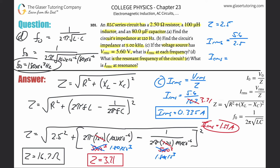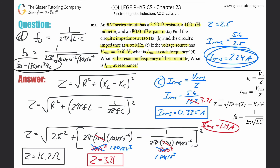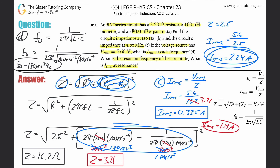So the RMS current at resonance is 2.24 amps. Notice how this is the maximum current that can flow. When the circuit resonates, the inductive and capacitive reactance terms cancel to zero, leaving the impedance equal to just the resistance — and that gives the maximum current produced.